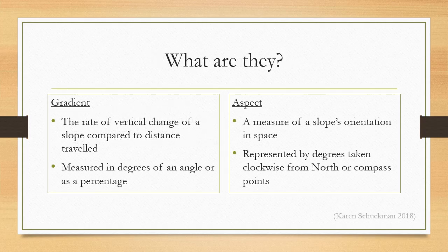Firstly, let's define gradient and aspect. Gradient is the rate of vertical change of a slope compared to distance travelled. It is measured in degrees of an angle or as a percentage.